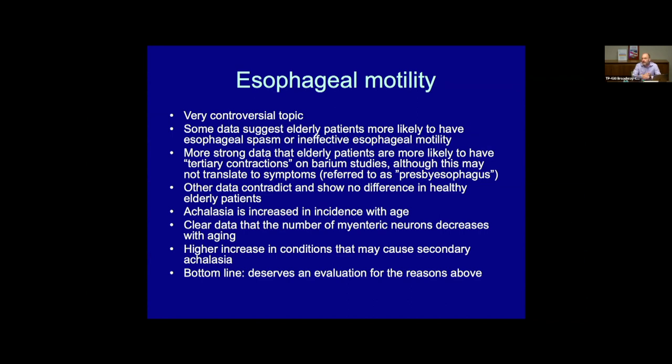From pathology data, there is clear evidence that myenteric neuron numbers in the esophagus decrease with age. Achalasia incidence rises dramatically past age 80 — from the usual 1 in 200,000 across all ages to 19 per 200,000, so while still relatively rare, it is significantly more common in that age group.